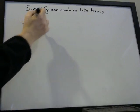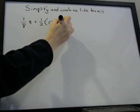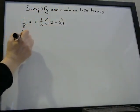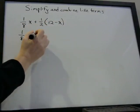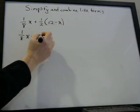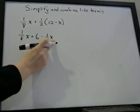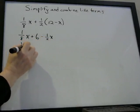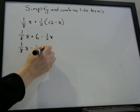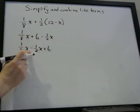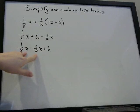Next example: ⅛X plus ½ times (12 minus X). We'll use the distributive property. ½ times 12 is the same as 12 divided by 2, which is 6. ½ times negative X is negative ½X. So we're going to put like things together: ⅛X minus ½X plus 6. Just move them next to each other — you don't have to, but it makes it easier to see.